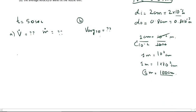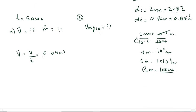First, V-dot equals volume divided by time. So V-dot = 0.04 meter cube divided by 50 seconds, which gives us 8 × 10⁻⁴ meter cube per second.